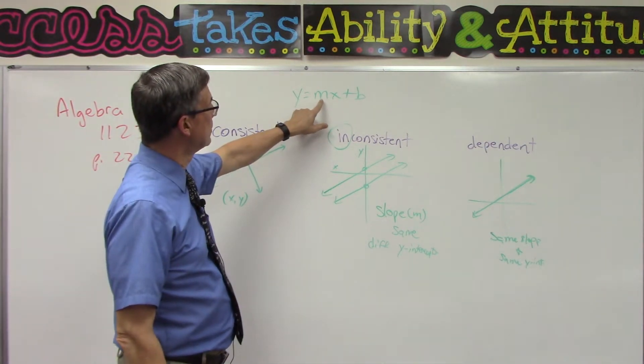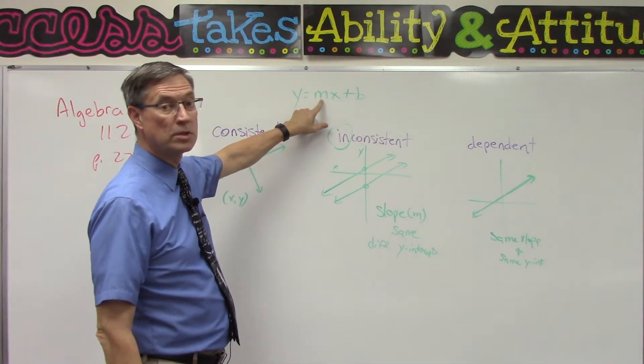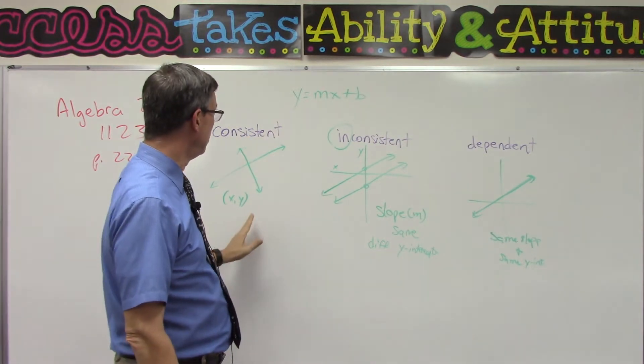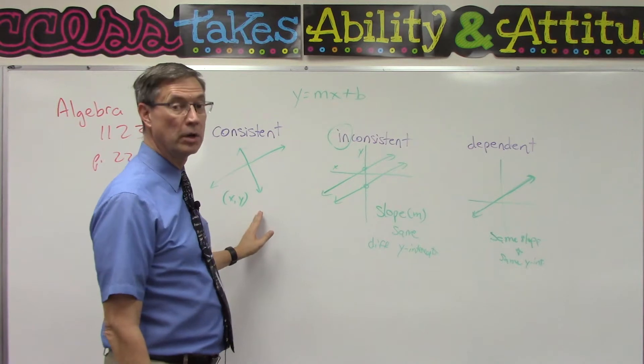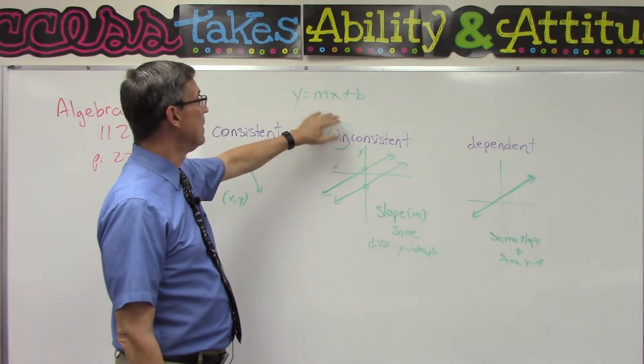If the slopes are different, then right away we know they are going to cross at some point. If you turn both of them into this form and the slopes are the same, then you can plug in values.